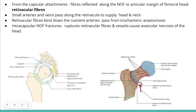Small arteries and veins pass along the retinacular fibers to supply the head and neck region, and the retinacular fibers bind down these arteries and facilitate their passage. When an intracapsular fracture happens in the femoral neck, these retinacular fibers can be damaged or ruptured. The accompanying vessels can also be damaged, compromising the arterial supply to the head and neck region, and ultimately avascular necrosis of the femoral head can occur.